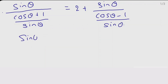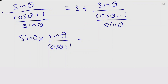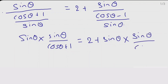Now we can write the division as multiplication. So on the LHS we get sin θ multiplied by sin θ divided by cos θ plus 1. This is equal to on the RHS side, 2 plus sin θ — the division written as multiplication — so it becomes sin θ divided by cos θ minus 1.